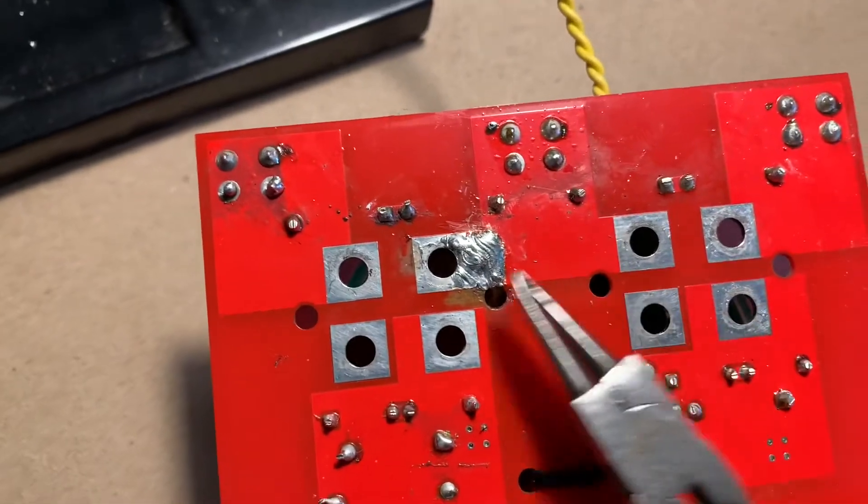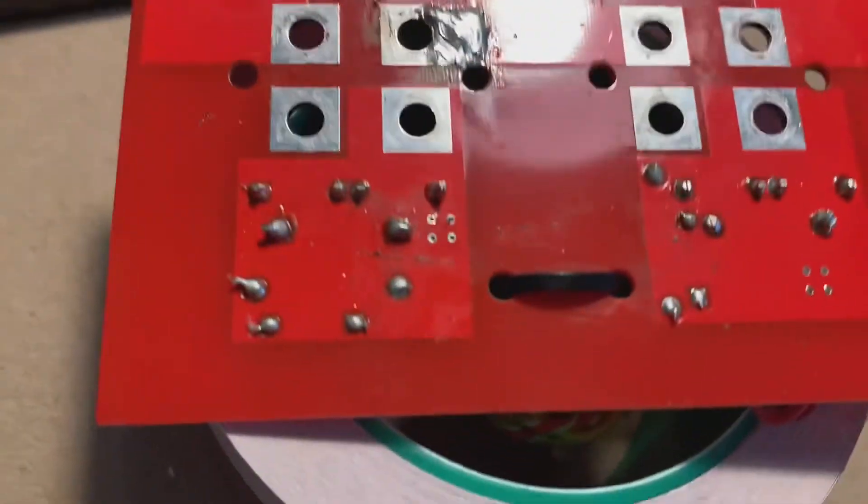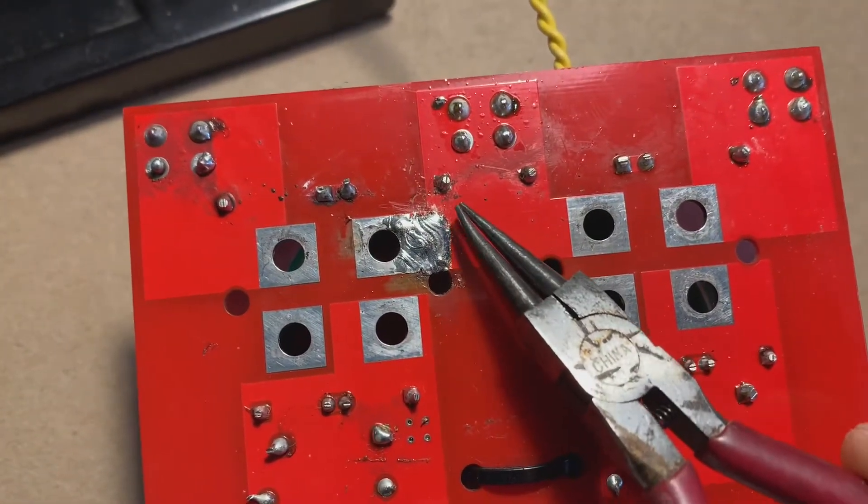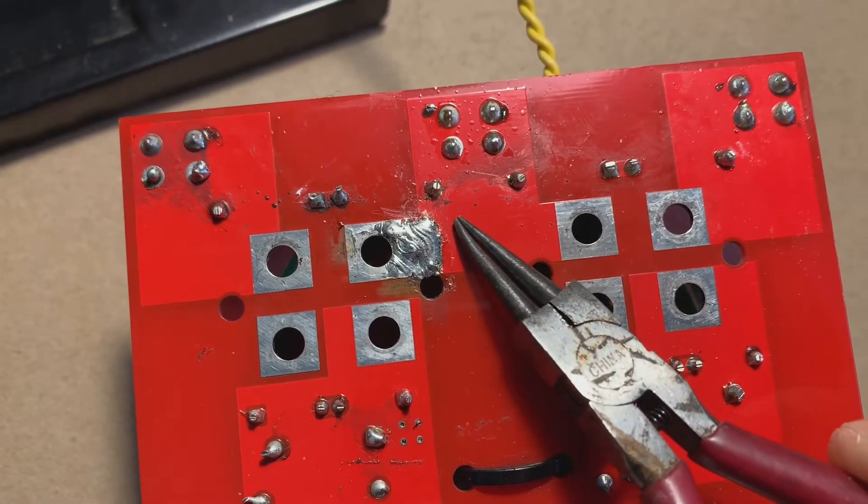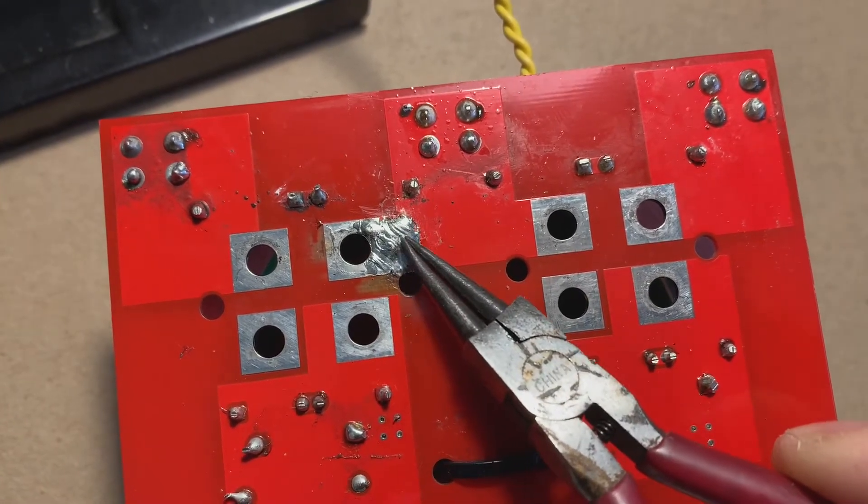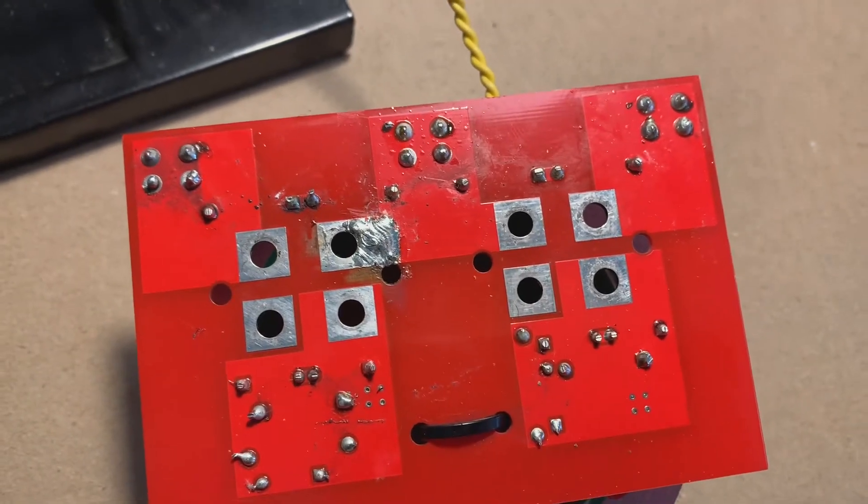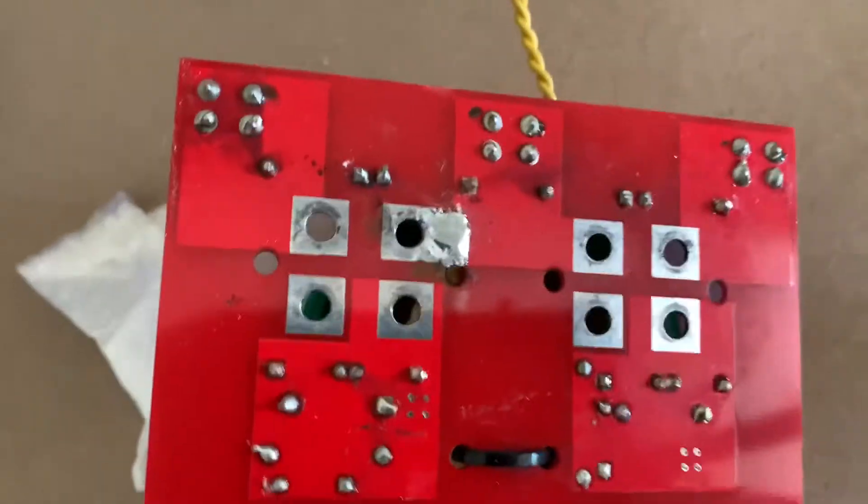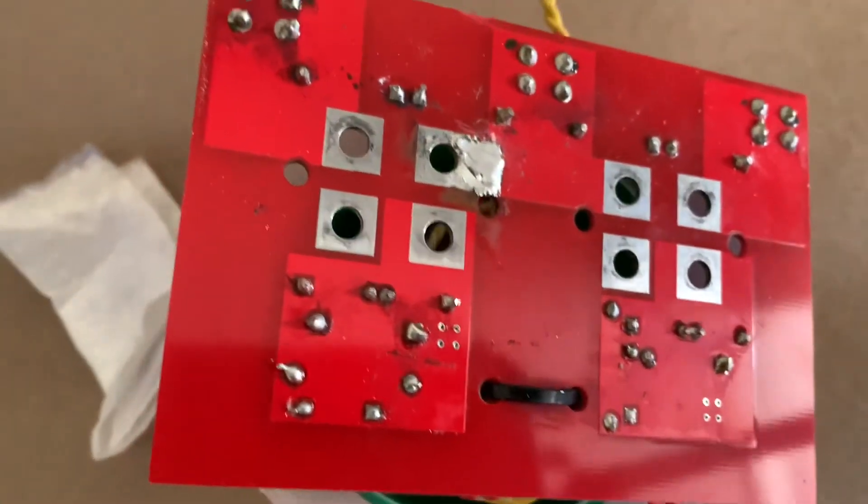So there's the final result with the broken trace repair. One thing I might have done better would be to remove more of the paint, the enamel paint. And then it would have given me more area around the tape to make the join. But that was the only thing I noticed that I probably could have done better. But there you go. I just sanded off some of the excess solder here, as you can see. So that looks better and it's more flat.